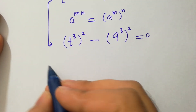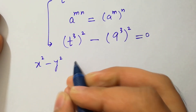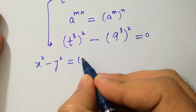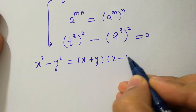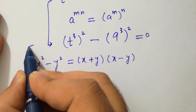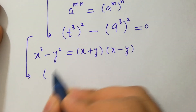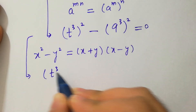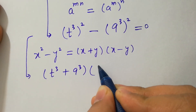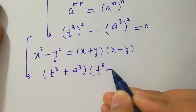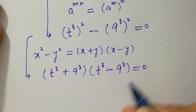Apply the formula x² minus y² which equals (x + y)(x − y). We have (t³ + 9³)(t³ − 9³) equals 0.